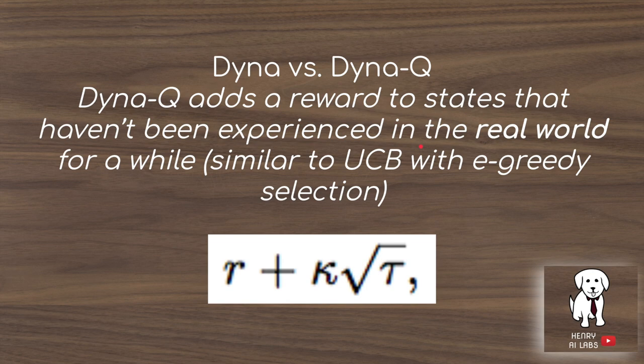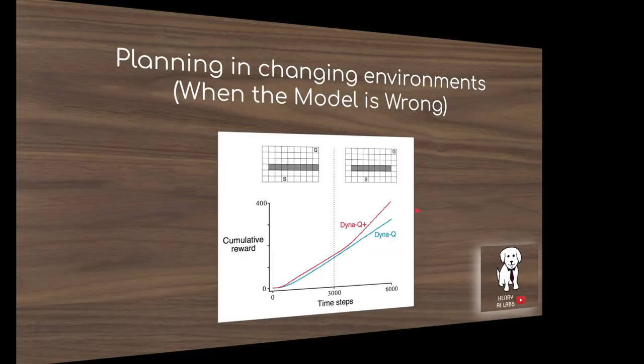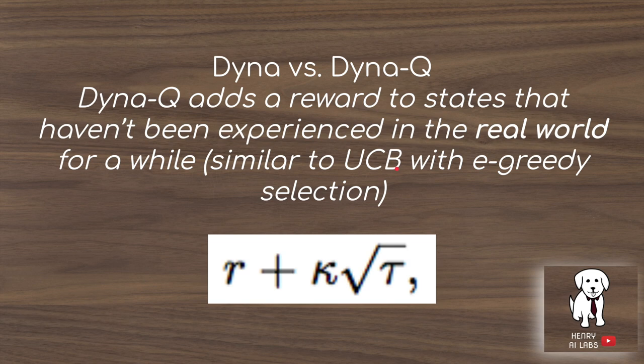Dyna-Q+ addresses this. Looking at these two graphs, Dyna-Q+ outperforms Dyna-Q in both cases. Similar to upper confidence bound (UCB) from chapter 2, Dyna-Q+ adds a bonus reward to states that haven't been visited in real experience for a while — encouraging exploration of potentially changed parts of the environment.